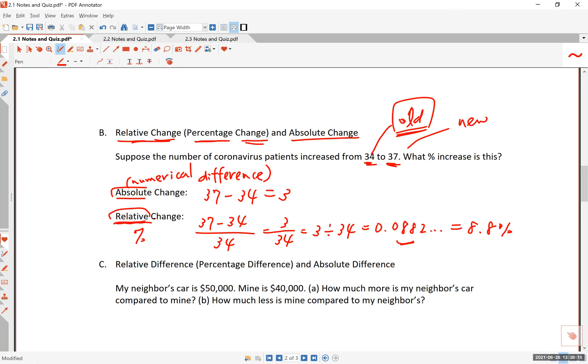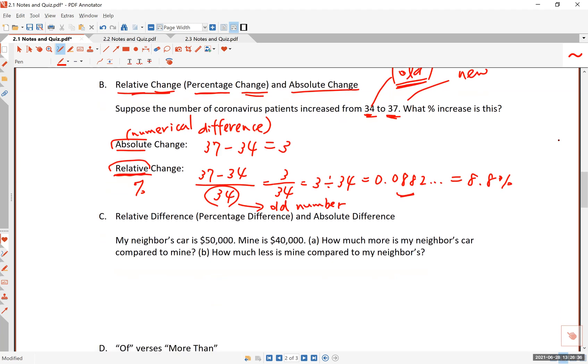The relative just means percentage. So the relative change is the percentage change based on always the old number before the change. And so you can say that the number of coronavirus patients increased by 8.8%. That would be a correct statement.